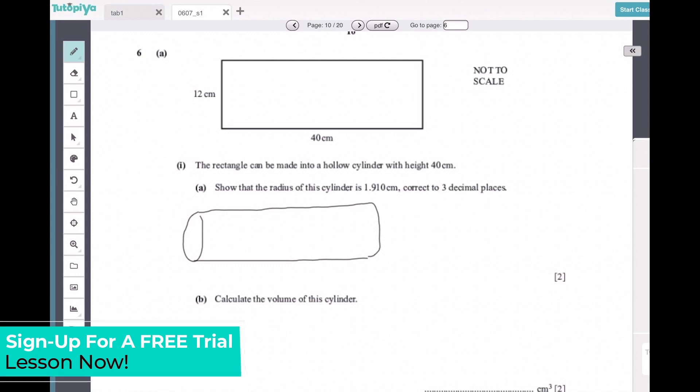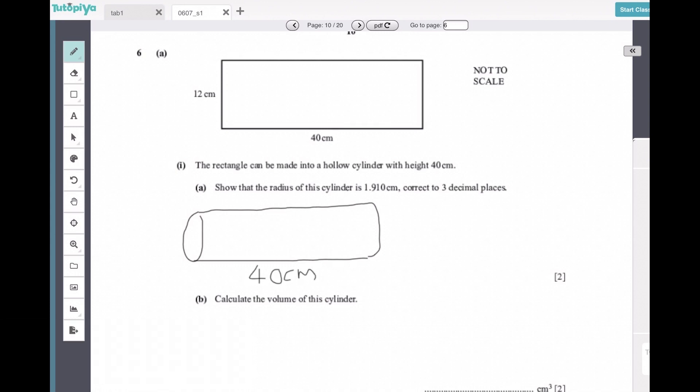It is going to form a cylinder with length 40 centimeters and 12 centimeters down here. This 12 centimeters, what you need to understand, is going to be the entire distance around the circle.